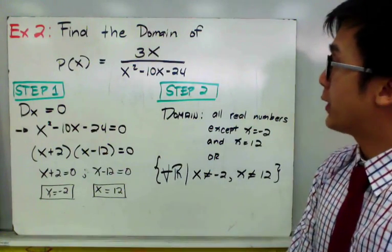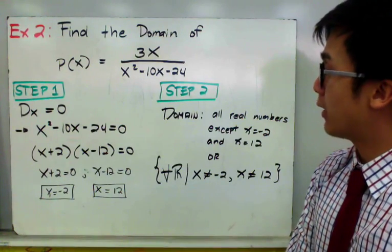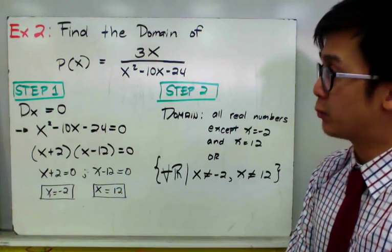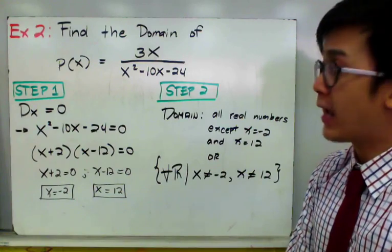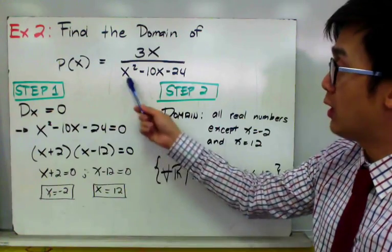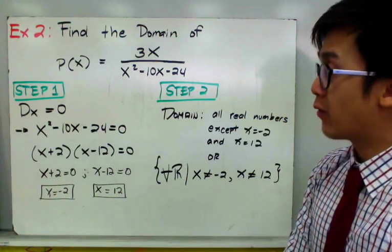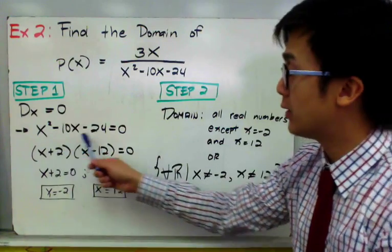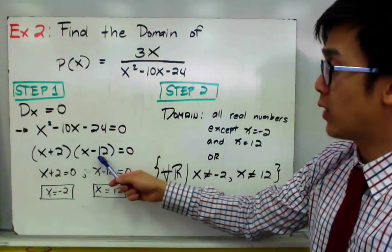For our second example, we need to find the domain of p of x, where p of x is equal to 3x all over x squared minus 10x minus 24. Just like the previous example, we set the denominator equal to 0 and solve for x. We have x squared minus 10x minus 24 equal to 0. This factors as x plus 2 times x minus 12 is equal to 0.